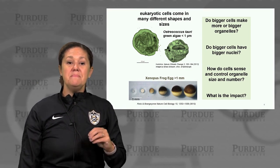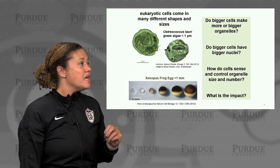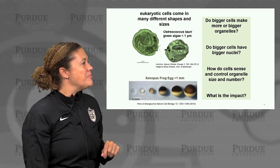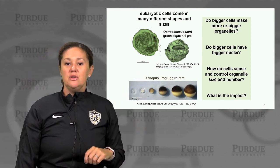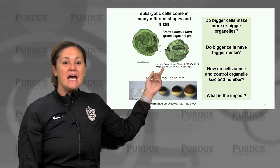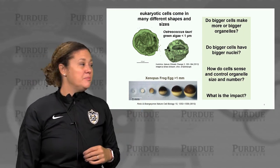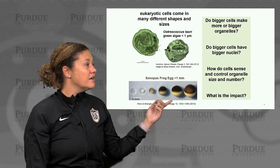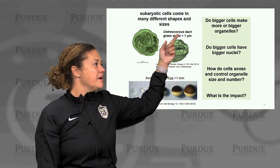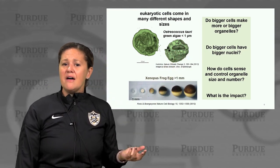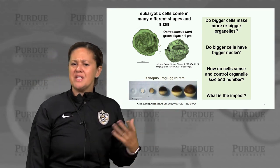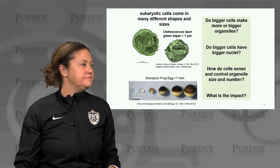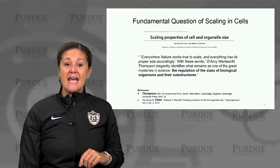Eukaryotic cells can come in many different shapes and sizes over a wide range. One question you can ask is: do bigger cells make more organelles, or do they make bigger organelles? As examples of this range, we have one of the smallest known eukaryotic cells — a particular green algae less than one micron in size — and on the other end of the spectrum, very large single cells such as the Xenopus frog egg, which is more than a millimeter in size. So, does a bigger cell have a bigger nucleus, and how do cells sense and control their size and number?